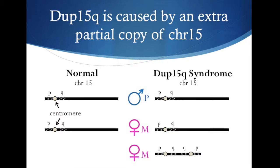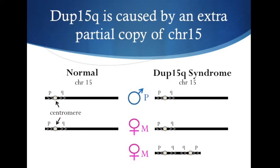In particular, we looked at DUP15Q syndrome, which occurs due to a duplication of part of chromosome 15. Specifically, DUP15Q patients will have two extra copies of the maternal 15q11-13 region, yielding a 3-to-1 ratio of maternal to paternal alleles in DUP15Q syndrome as opposed to the normal 1-to-1 ratio.